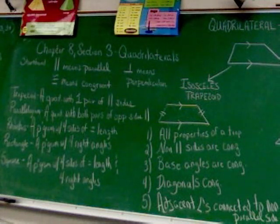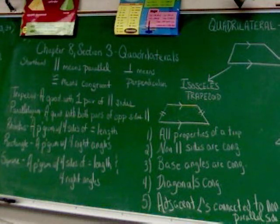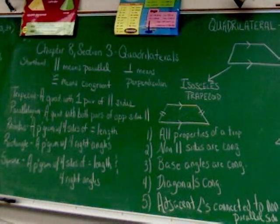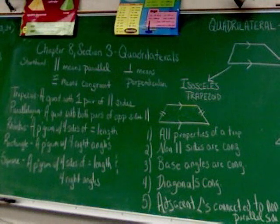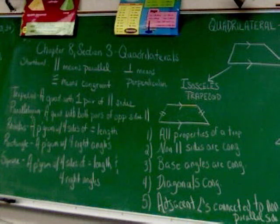Trapezoid. A trapezoid is a quadrilateral with one pair of parallel sides. That's it.